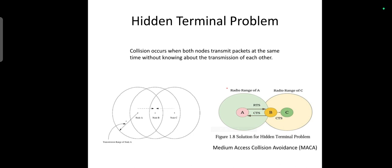The hidden terminal problem refers to the collision of packets with the receiving node due to simultaneous transmission of those nodes that are not within the direct transmission range of the receiver.